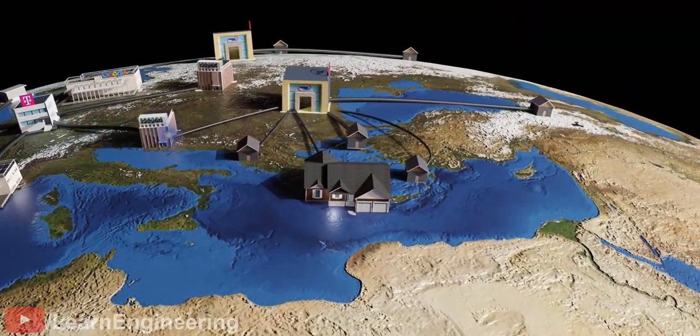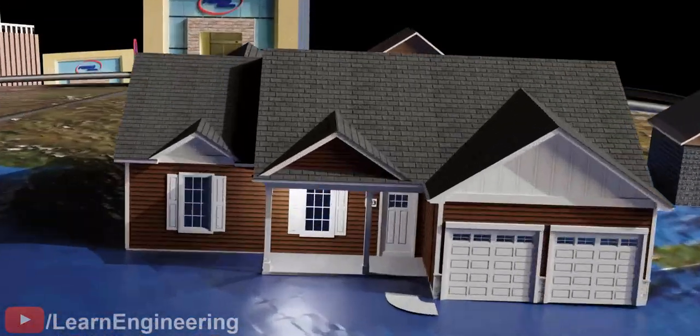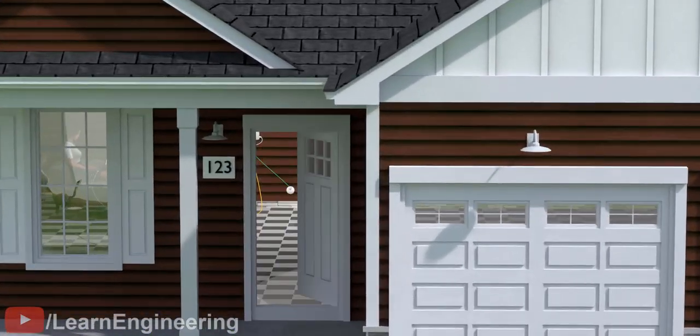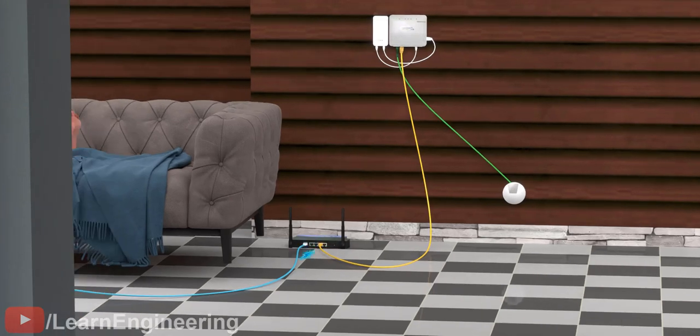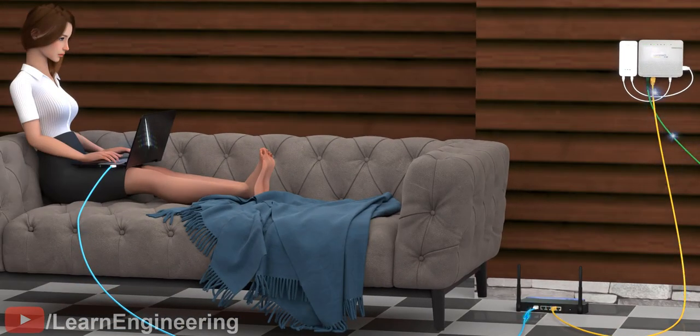The optical fiber cables carry signals in the form of light. However, your laptop or mobile phone processes electrical signals. So how does this conversion of light to electrical signals happen? And more importantly, why is the internet structured the way it is today?